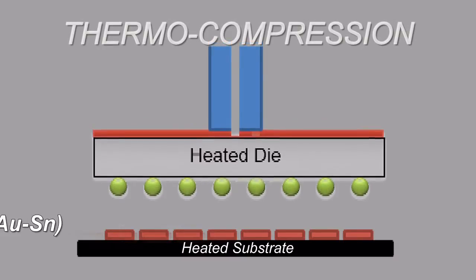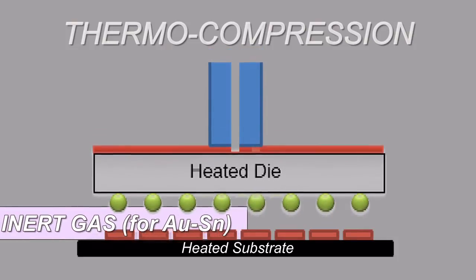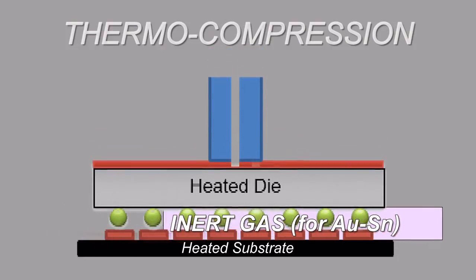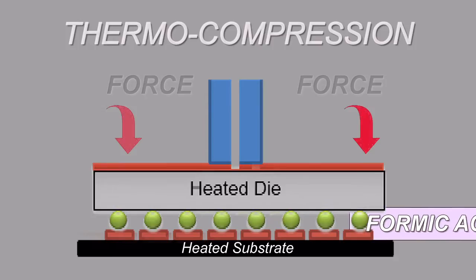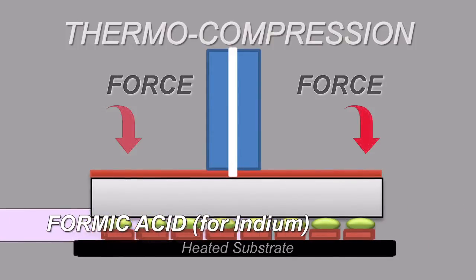Let's take a look at these technologies. First, thermocompression: the application of heat to both die and substrate using a controlled process force and an inert atmosphere.